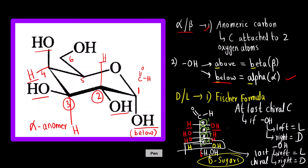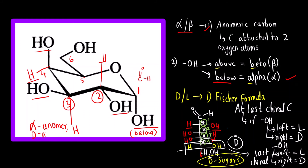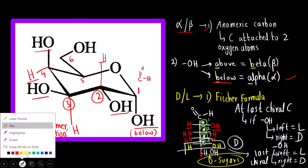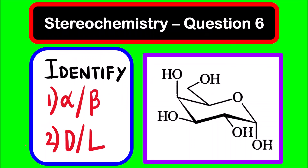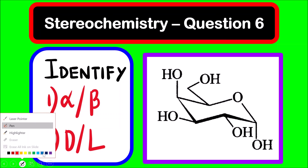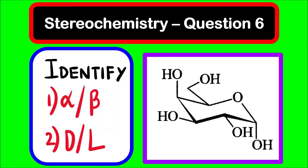So the correct answer is alpha anomer and D notation — this is an alpha D sugar. The correct answer is alpha D.